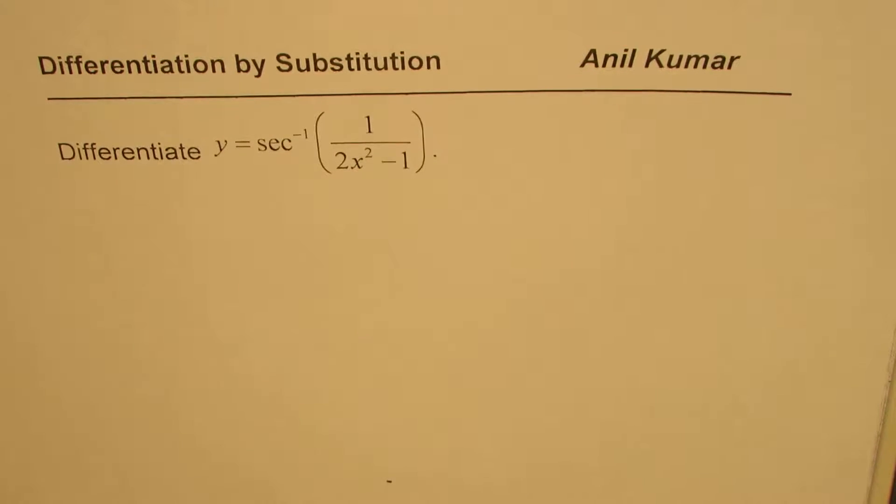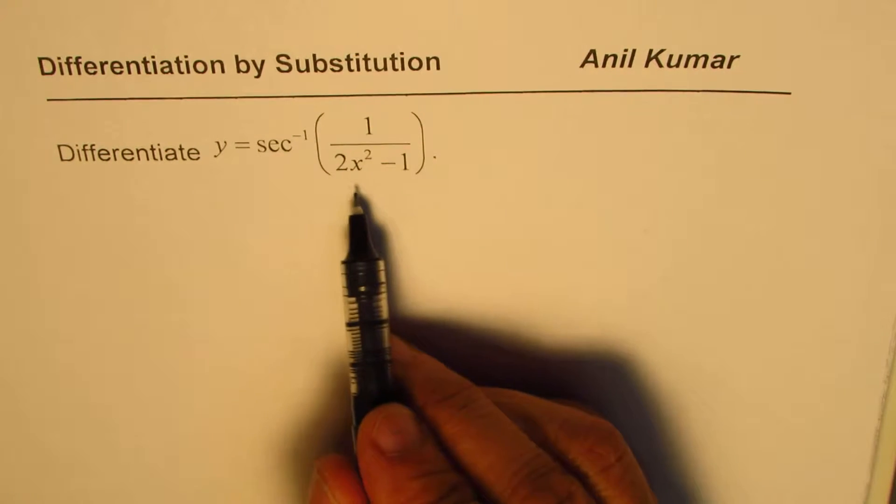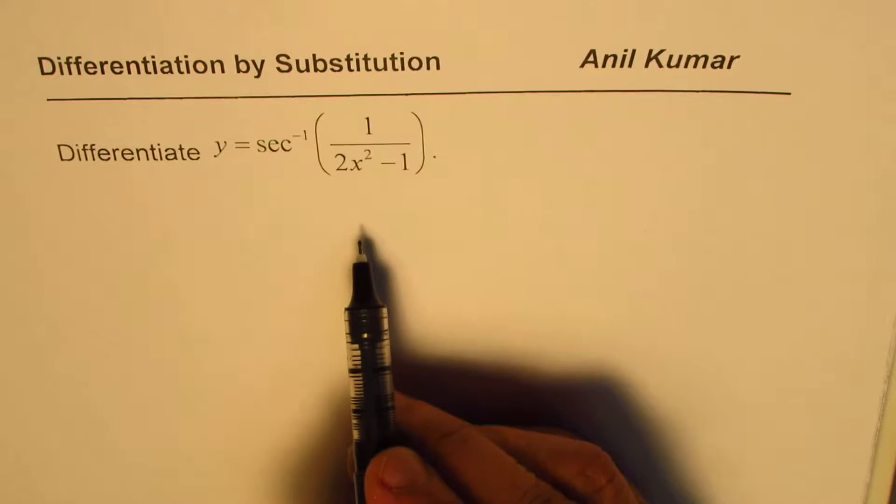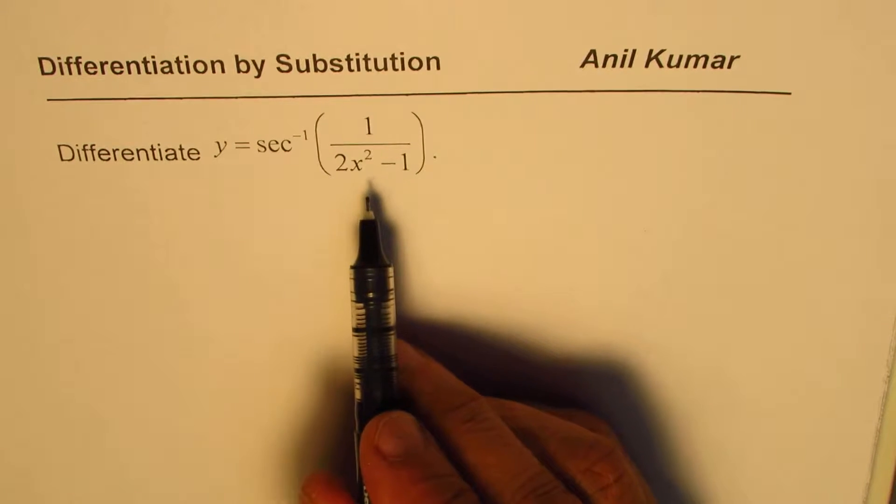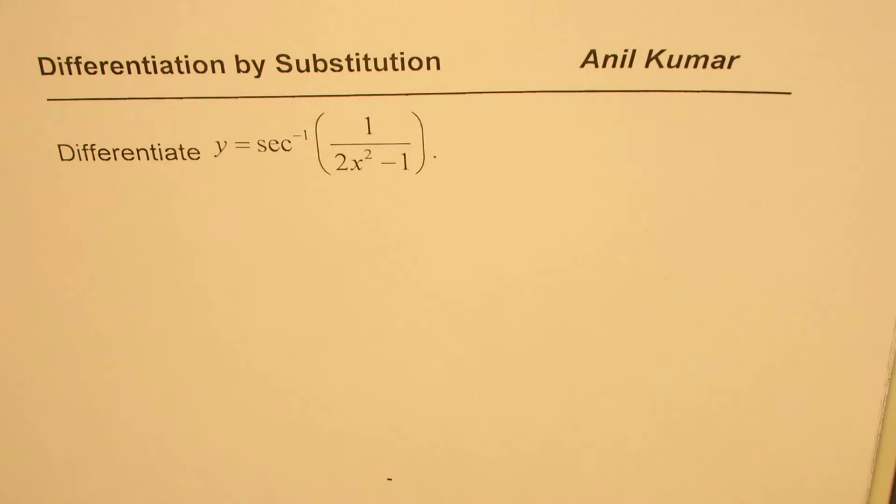The question here is to differentiate y equals secant inverse 1 over 2x squared minus 1. In this, we'll apply the formula of cos 2 theta. Let me write down the formula so that we understand how to utilize these formulas.